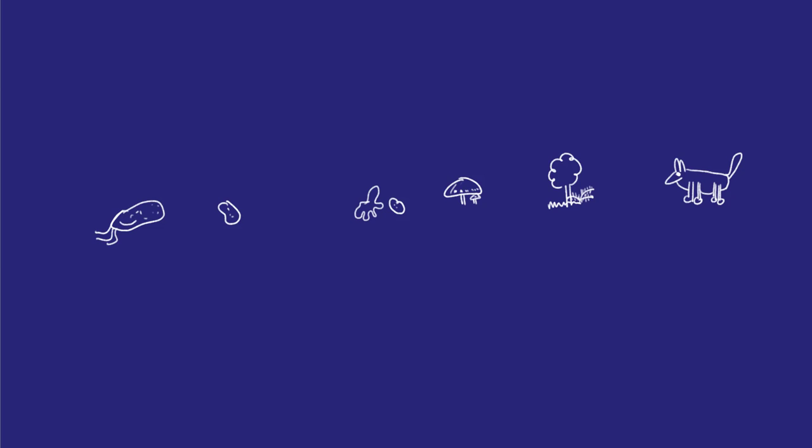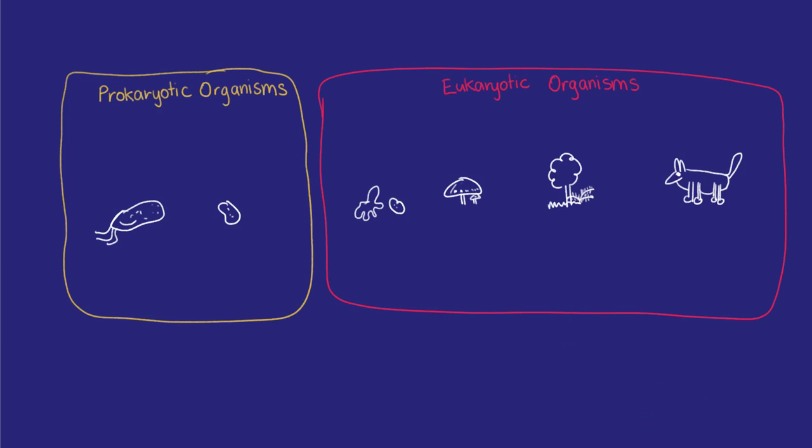Scientists, in this case phylogenists, still argue about the best ways to classify all living organisms because they just keep finding new ones and more diversity that they hadn't expected. We can generally accept though two major groupings that we can make are prokaryotic and eukaryotic organisms.